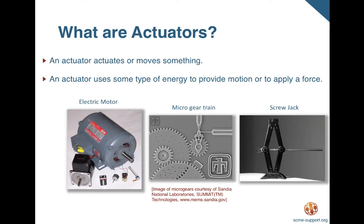An actuator is a device that actuates or moves something. An actuator uses some type of energy to provide motion or to apply a force. For example, an electric motor uses electrical energy to create a rotational movement to turn or move an object. A gear train uses a mechanical or electrical input to move something in rotary or linear motion. A screw jack uses manual or mechanical input to create linear motion. In short, an actuator converts some type of energy into motion.